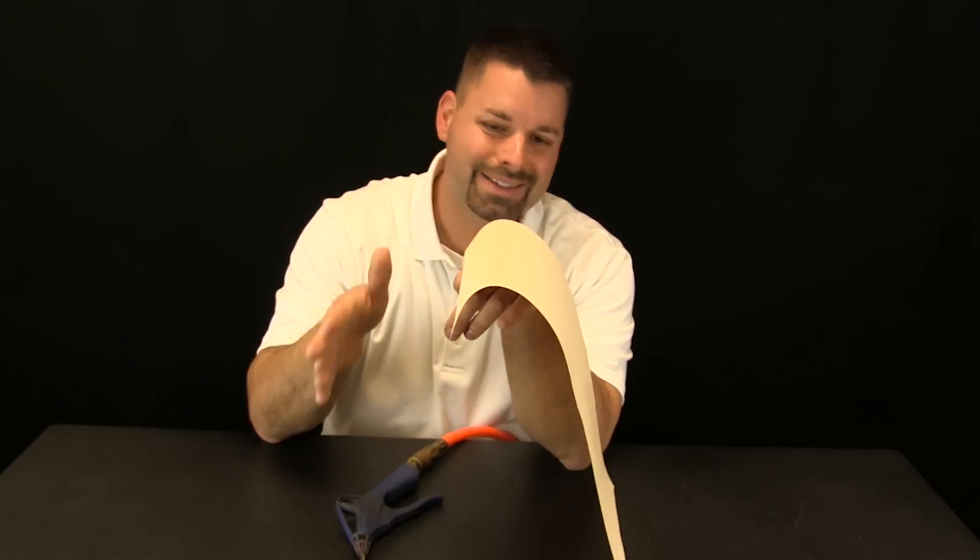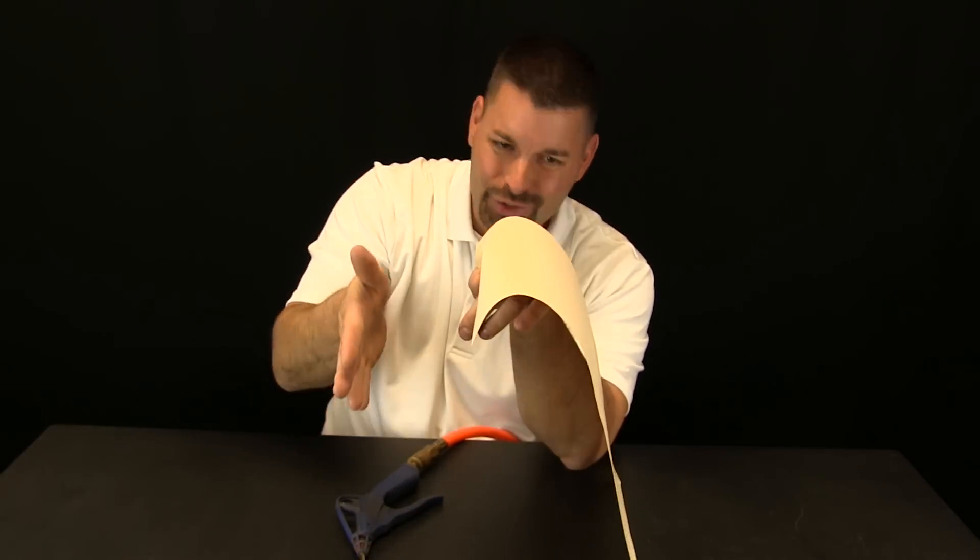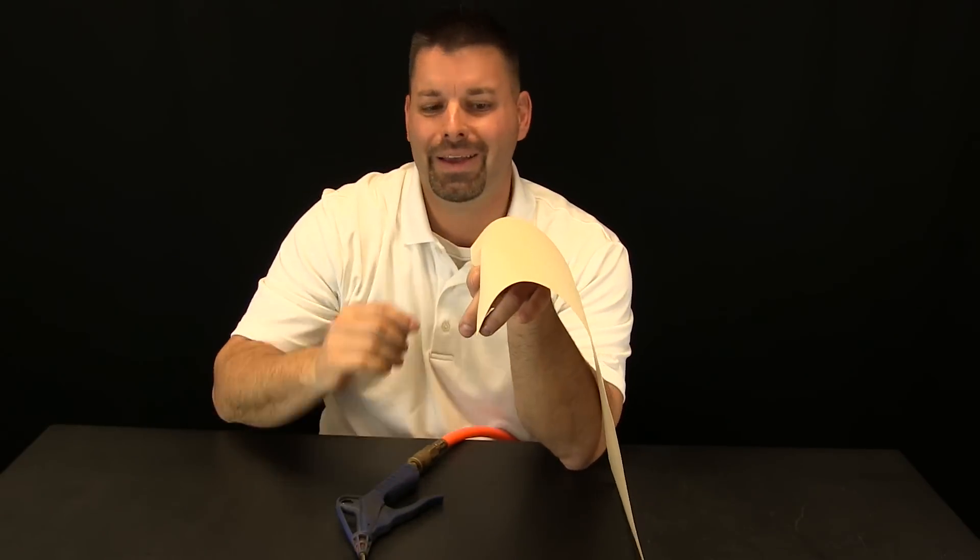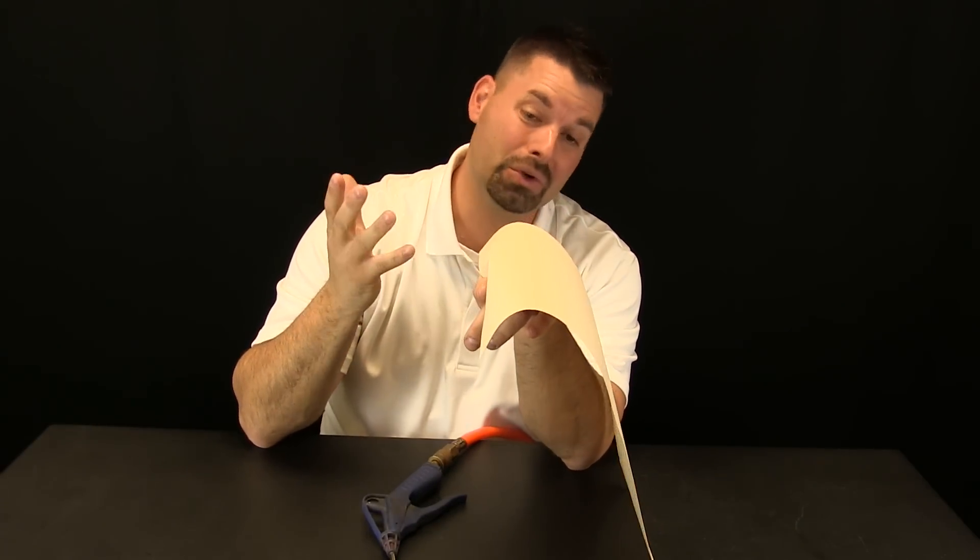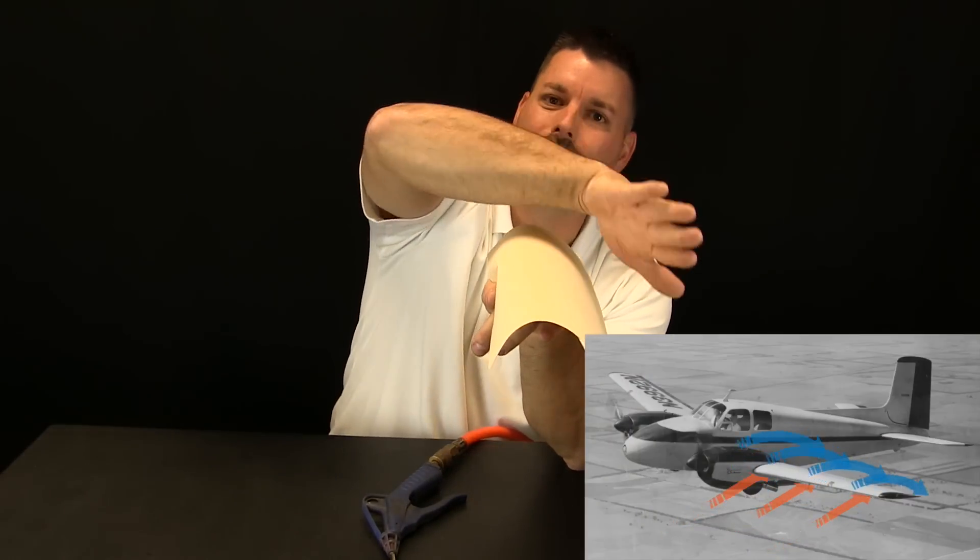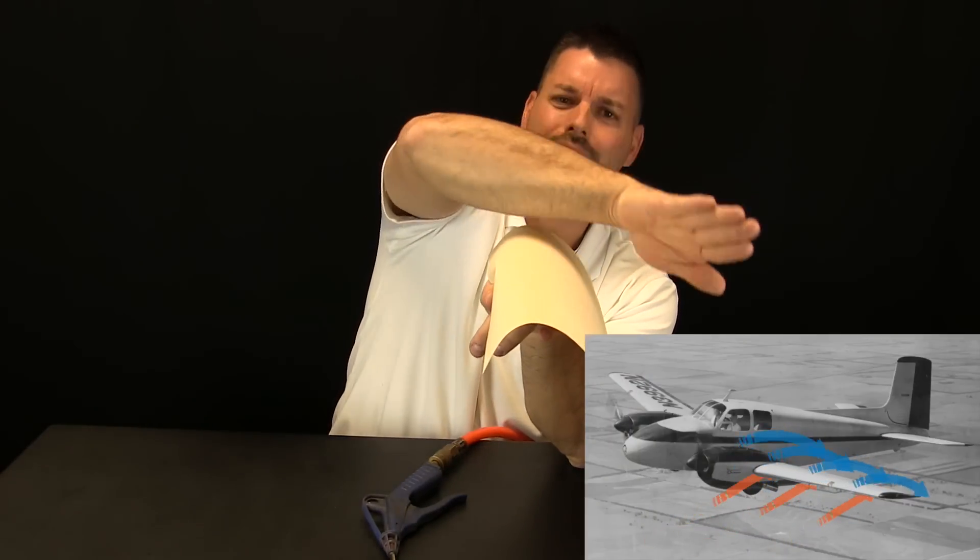The other thing to really look at is the shape of this paper. Do you see the curved shape of this paper? Well that is really important. It looks almost like an airplane wing to me. The top of the airplane wing is curved.